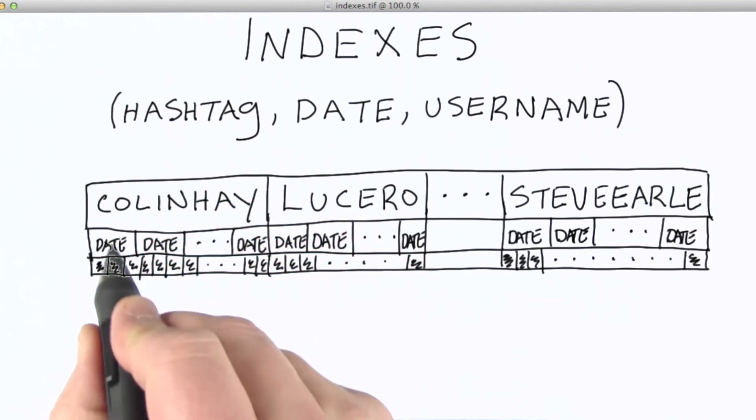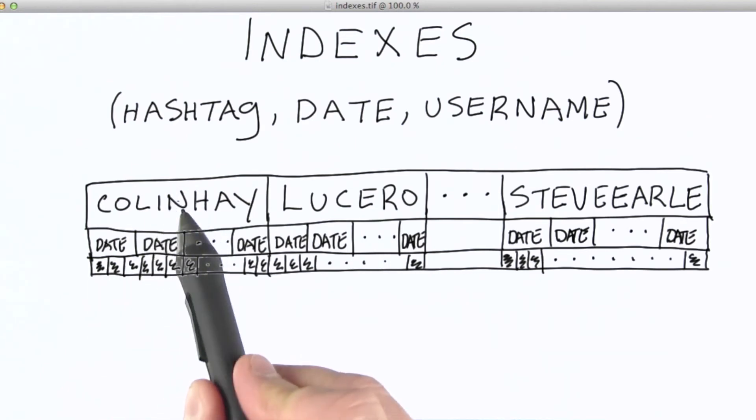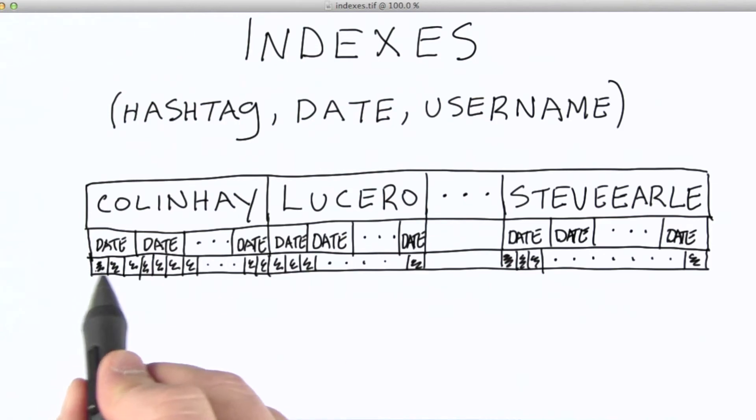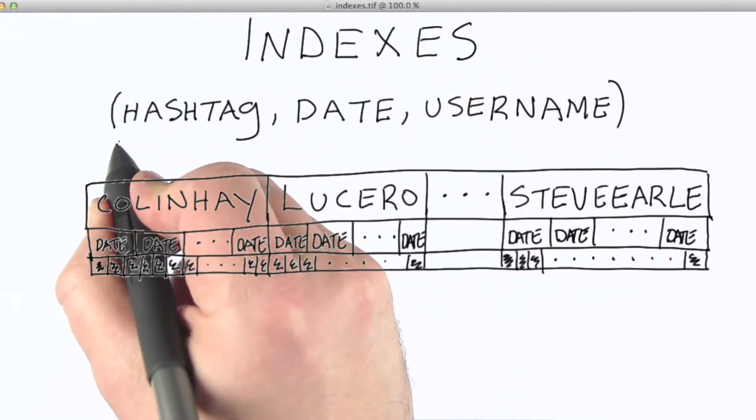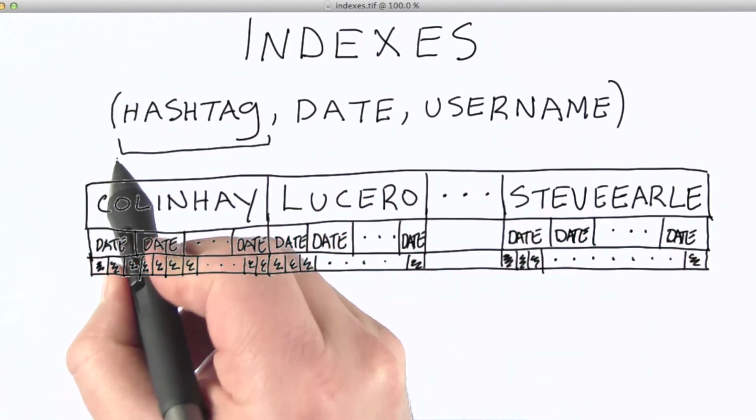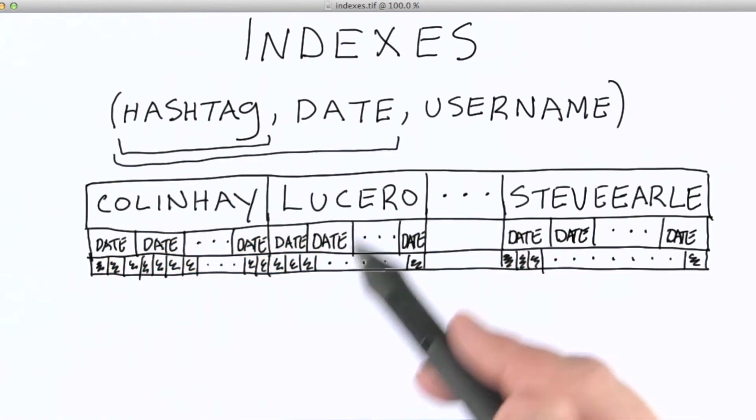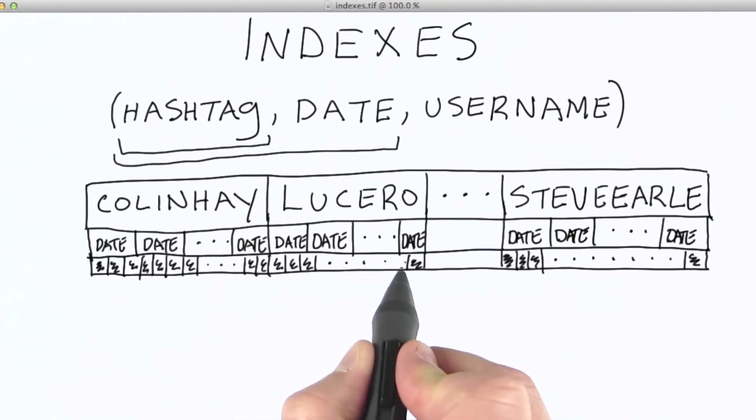And then finally, within each date, so for each day on which a tweet was created with the hashtag Colin Hay, we're going to have the usernames of all of those users, and those then will be sorted as well. So if you provide me just the hashtag, I can go into the index and find all the, let's say Lucero's in this case. And if you prefer to also provide me the date, then I can break it down and find all the Lucero tweets on that particular day. At the very bottom of this, of course, is going to be pointers to the actual data.